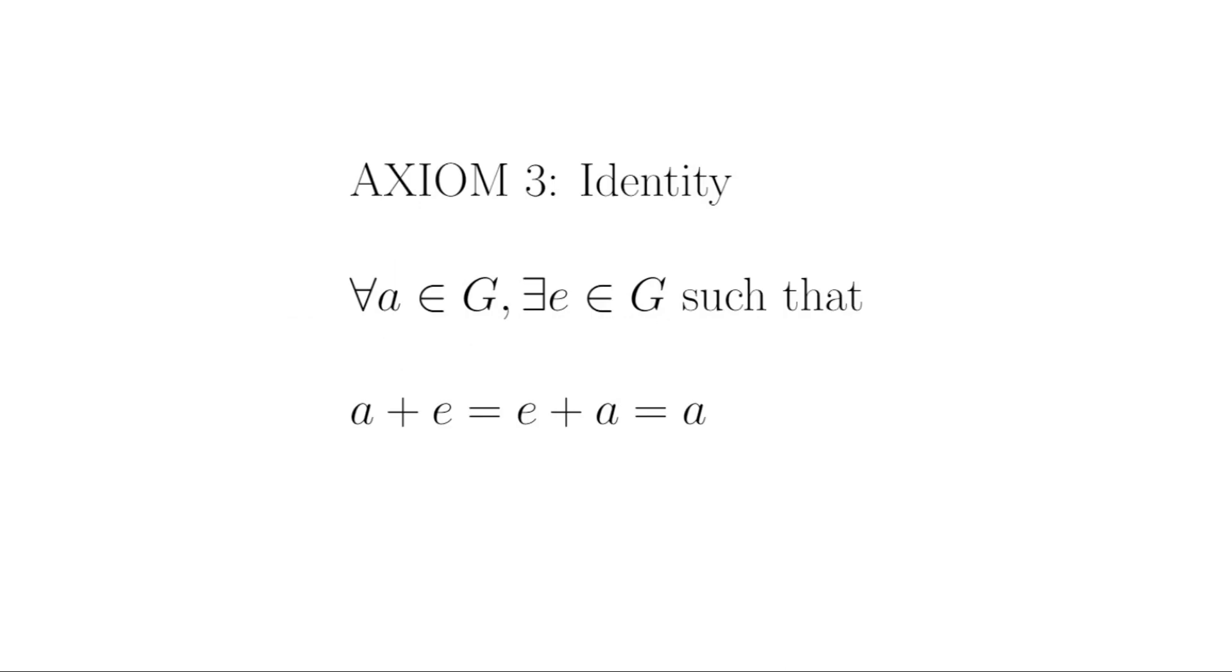Axiom three, identity. By identity, I mean there exists some element E of G, such that for any A in G, we have E + A equals A + E equals A.